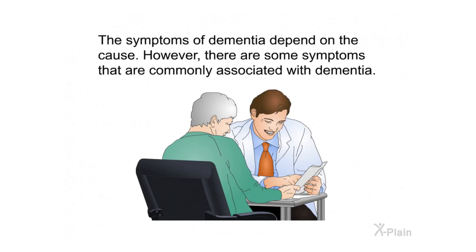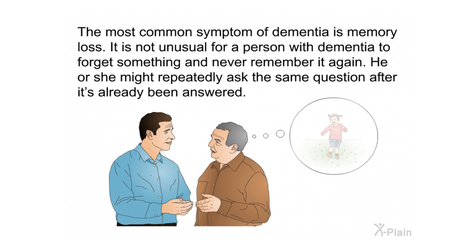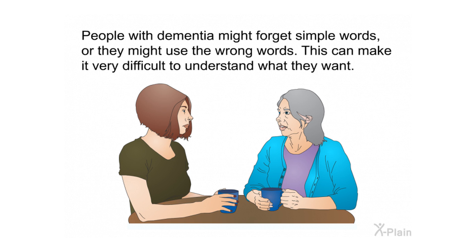The symptoms of dementia depend on the cause; however, there are some symptoms that are commonly associated with dementia. The most common symptom is memory loss. It is not unusual for a person with dementia to forget something and never remember it again, or to repeatedly ask the same question after it has already been answered. People with dementia might forget simple words or use the wrong words, making it very difficult to understand what they want.